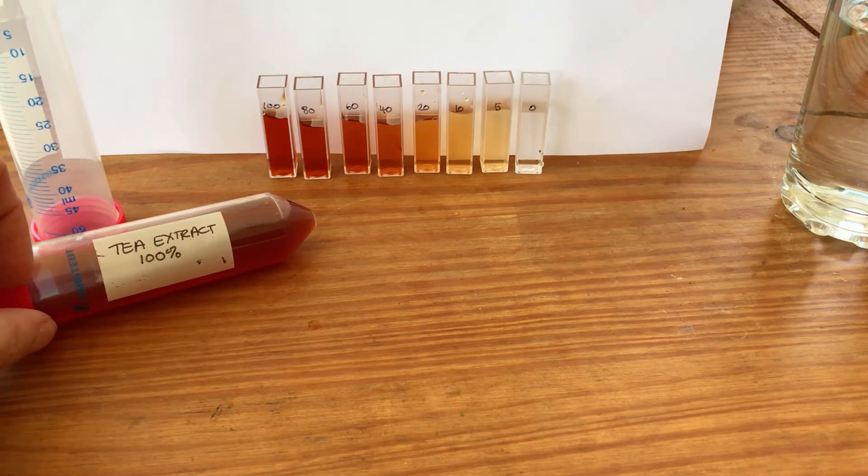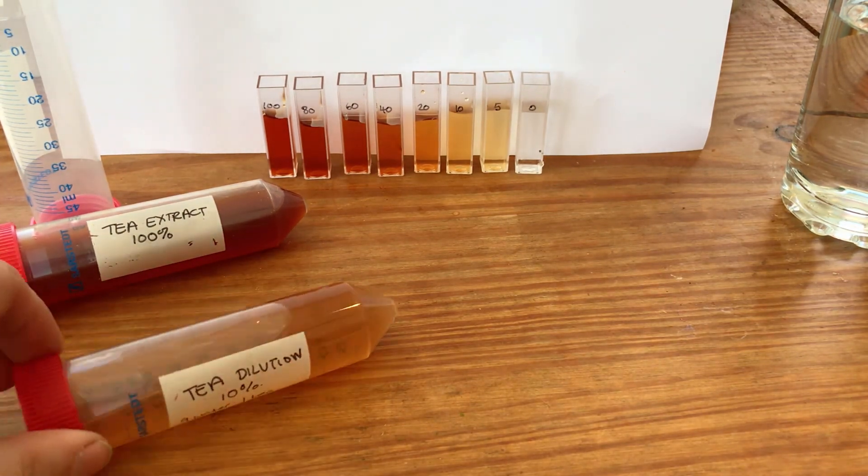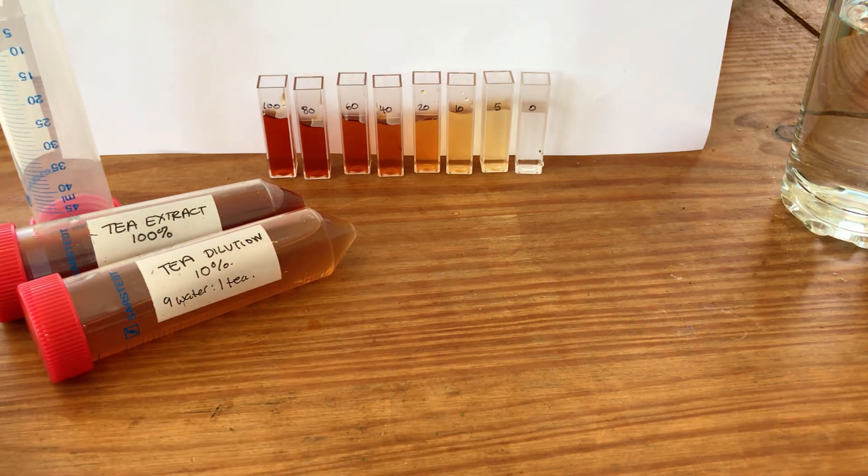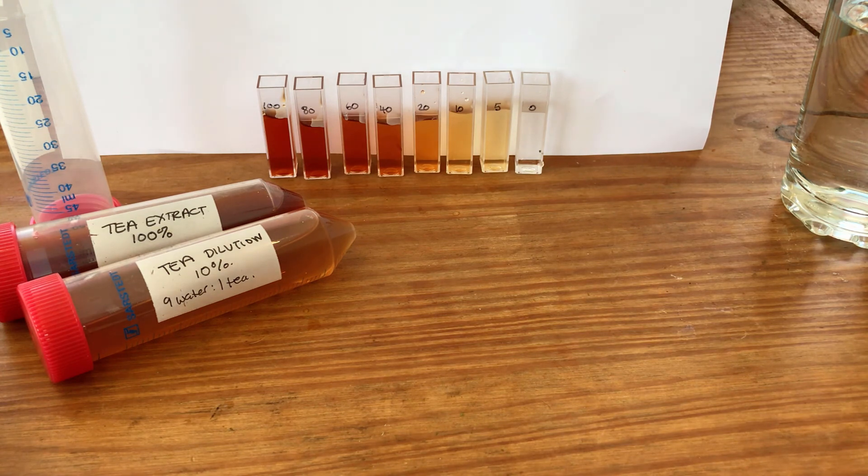For this experiment we're starting by making up our concentrated tea solution, that's literally just a cup of tea. We then made the 10% solution which was nine parts water to one part tea to get more dilute. We use the values in the table to set up our dilution series so each of these cuvettes has got a different concentration of tea in it, and then we quantify that using the mobile phone colorimeter setup.